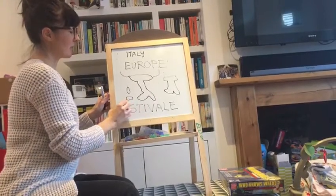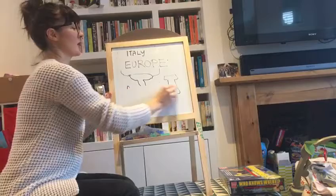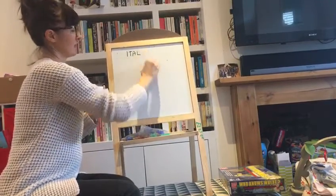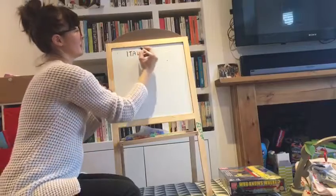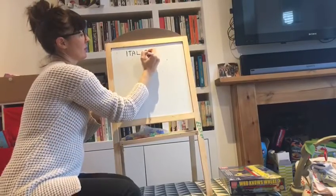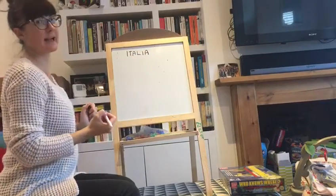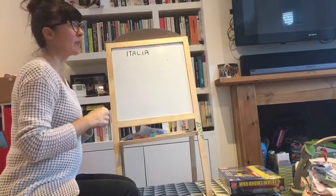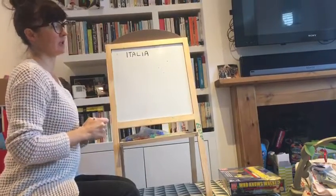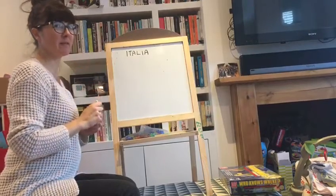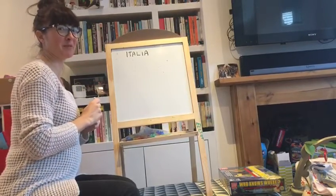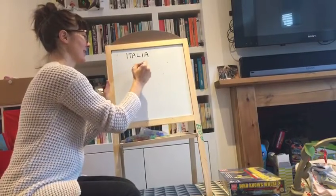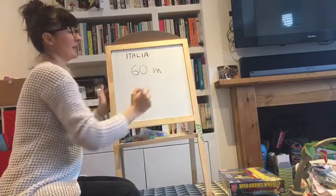And who knows how do we say Italy in Italian? That's very easy. Instead of 'Italy', we've got 'Italia'. And what's the population in Italy? It's actually not that far away from the United Kingdom as well — it is 60 million.